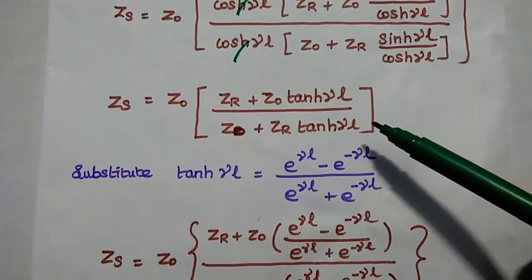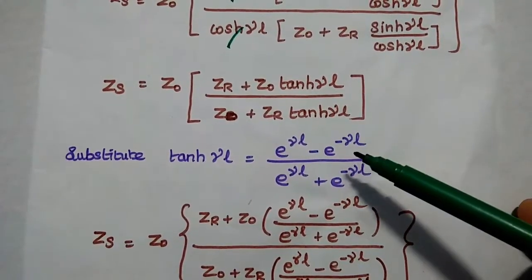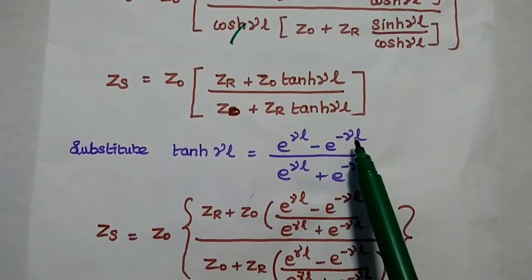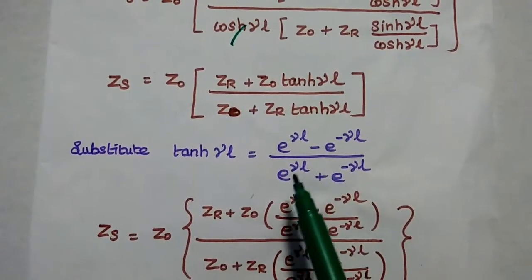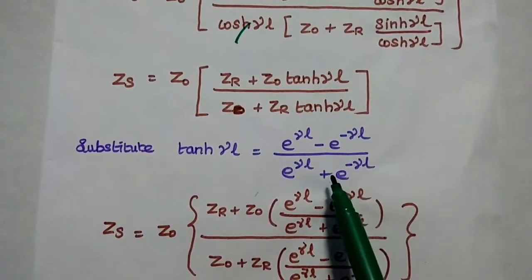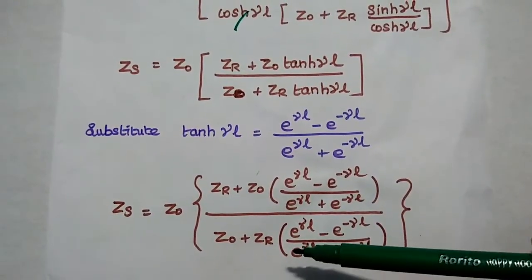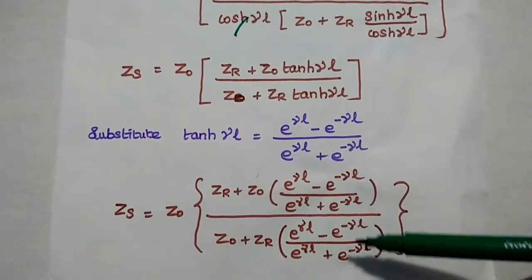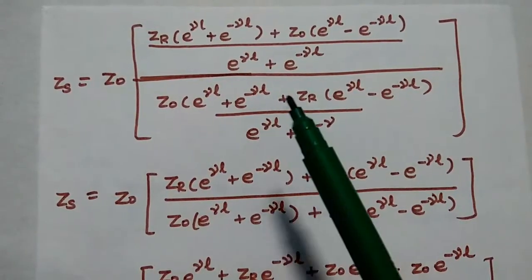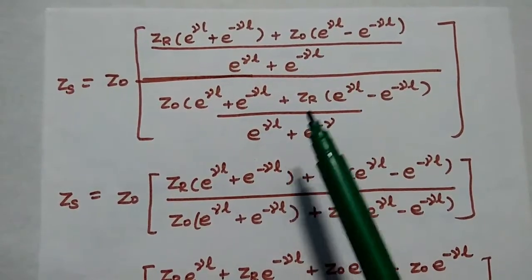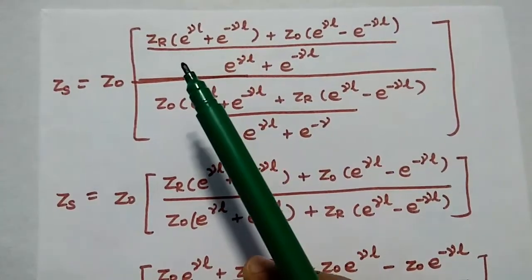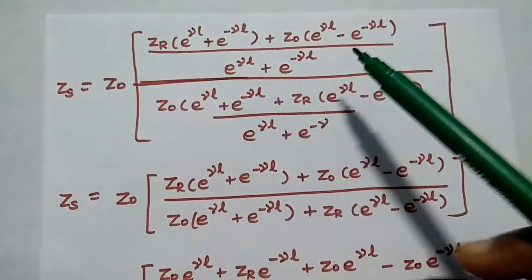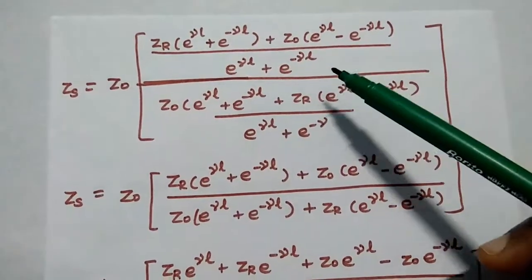We substitute tanh(γL) in exponential form: tanh(γL) is equal to e^(γL) minus e^(-γL) divided by e^(γL) plus e^(-γL). Then we take the LCM in both the numerator and denominator. In the numerator, Zr is multiplied with the term e^(γL) plus e^(-γL), plus Z0 times e^(γL) minus e^(-γL), all divided by this common denominator.